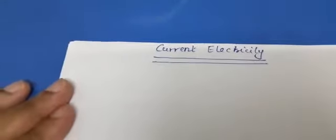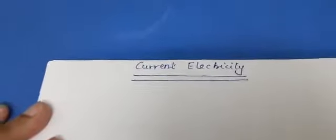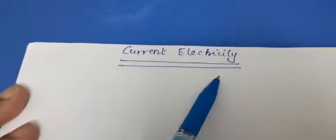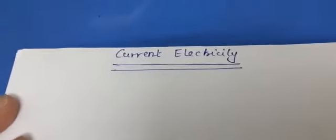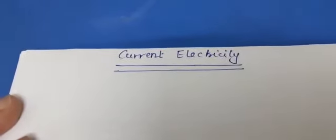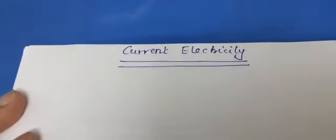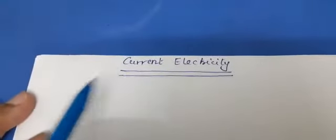Good morning students. Today we are starting our next unit, that is current electricity. So first of all, let me introduce you to current electricity. We are familiar with the term current — it is related with charges. Charges at rest we studied in class 12 in the previous unit, electrostatics. But when the charges are in motion, when we study the rate of flow of charge, then we term it as current. Due to the movement of charges, the electricity generated is taken as current electricity. So basically it is a branch of physics which deals with the study of charges in motion.